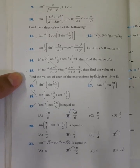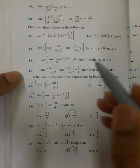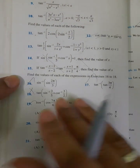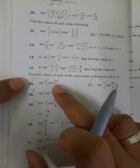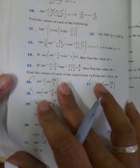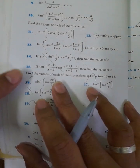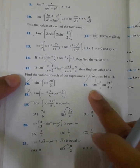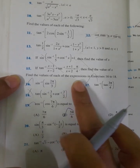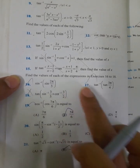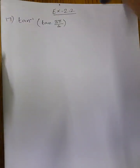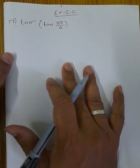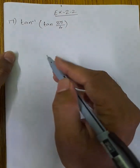Welcome students. Now we will see the 17th question and 21st question in this video. We will also see the introduction of the 16th question. Find the value of each of the expressions: tan inverse of tan(35π/4). So how do we find it?